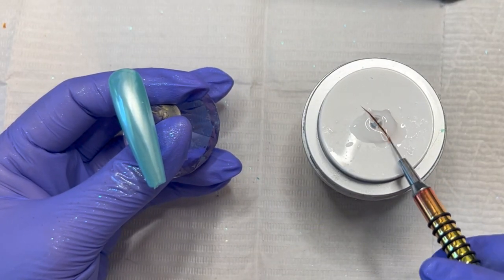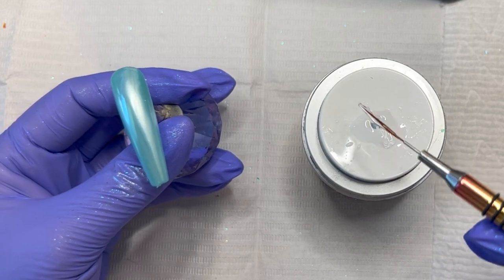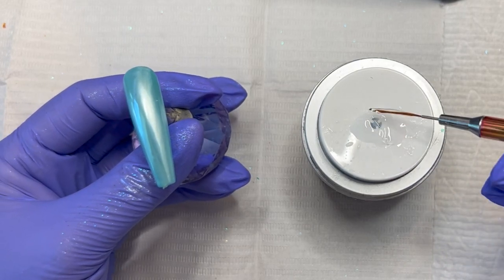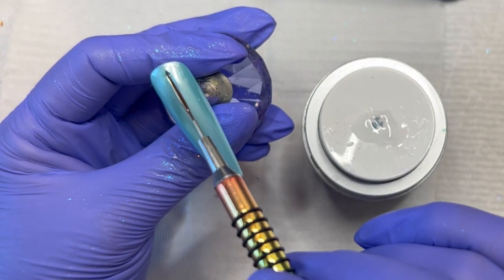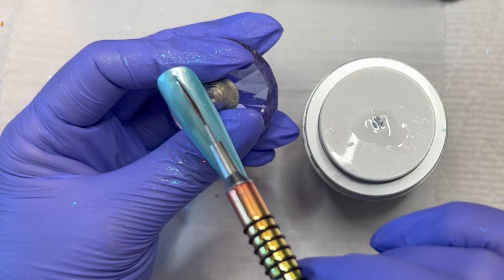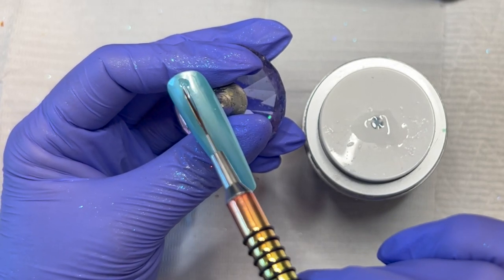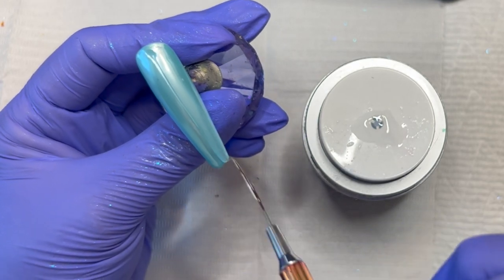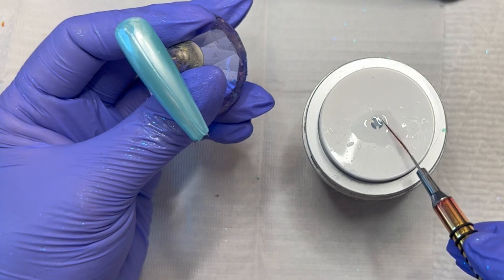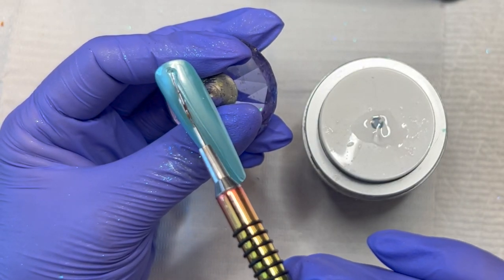So in order to do this, you want to fully saturate your brush and you want a rather large bead at the top because you're going to place it down at the top, wiggle it around, and then pull it straight down the nail. I'm just going to get a little bit more.